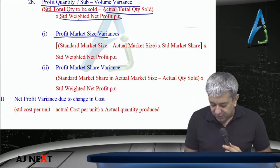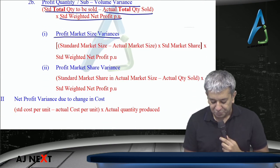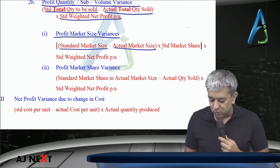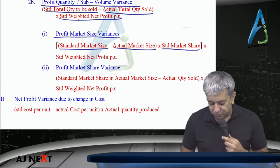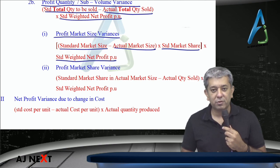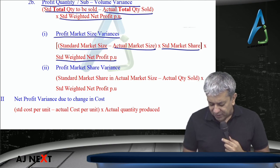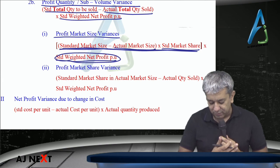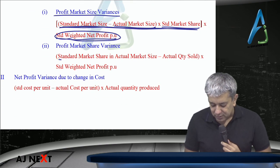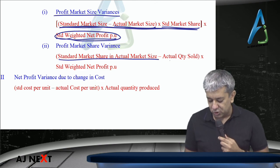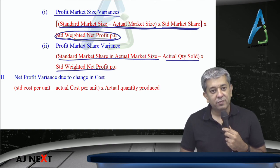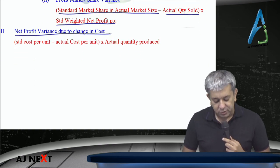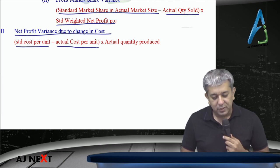Number one: profit market size variance. Market size that should have been, minus market size that actually became — so the market size changed by this much. Multiply by standard market share, then multiply by standard weighted average net profit per unit.